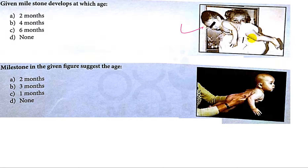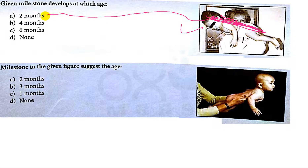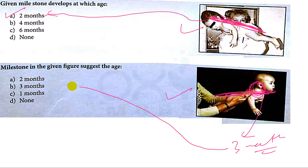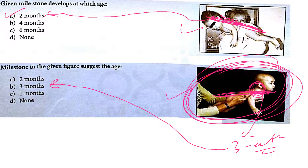Now in this picture, in the ventral suspension, the child is lifting the head equal to or at the level of the horizontal plane, and this is achieved at around two months of age. So the answer is A. And in this picture, after gaining neck control — which is achieved at around three months of age — the baby can lift his or her head above the horizontal plane. So at around three months of age, this is the position of the baby in ventral suspension, and the answer is B.